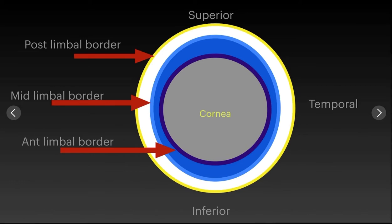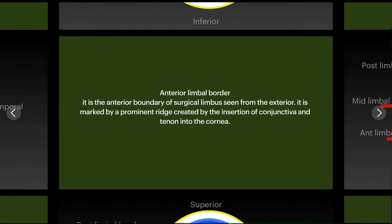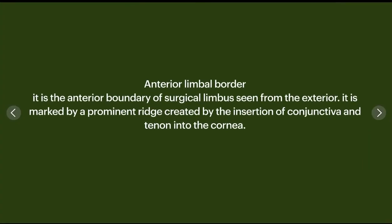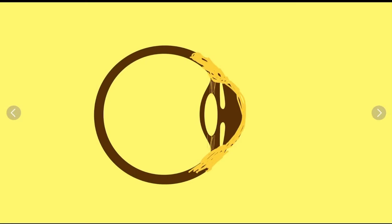The anterior limbal border is the anterior boundary — the interior margin of the surgical limbus — and it is delineated by the insertion of the conjunctiva and Tenon's into the cornea. This is our eye model as a whole, but we are more concerned with the limbus.